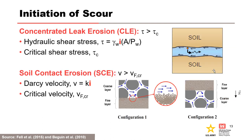For scour, you cannot just discuss hydraulic gradient. For concentrated leak erosion, hydraulic shear stress is a function of hydraulic gradient as well as pipe or crack geometry, and the critical shear stress is dependent on erodibility. For soil contact erosion, the Darcy velocity is a function of hydraulic gradient and horizontal permeability, and the critical velocity is based on a theoretical critical value from experiments, which is a function of particle size and porosity.